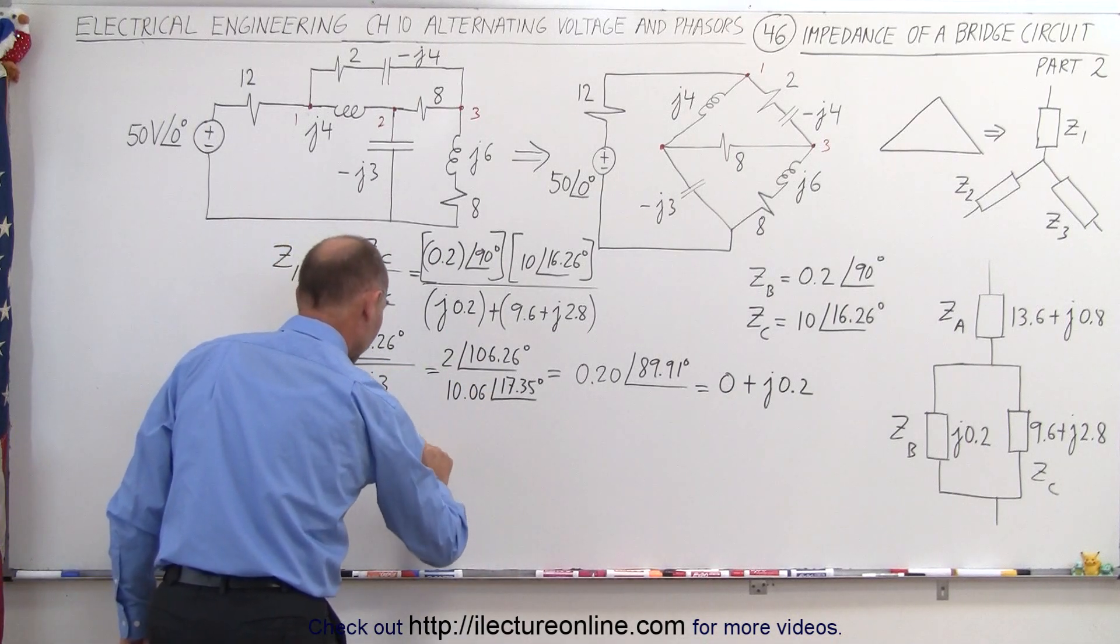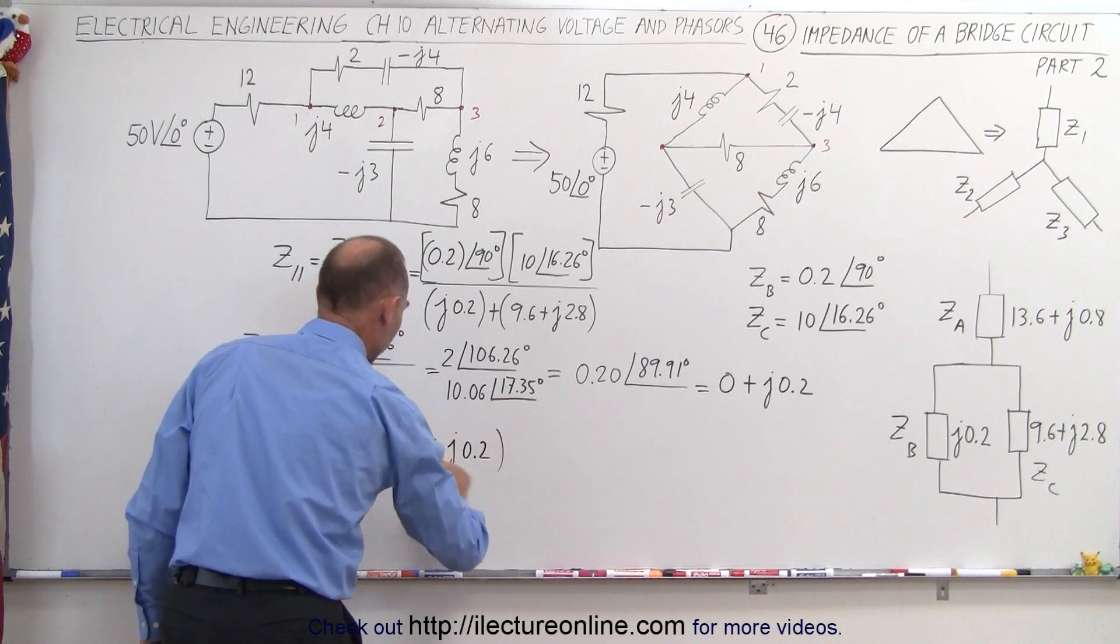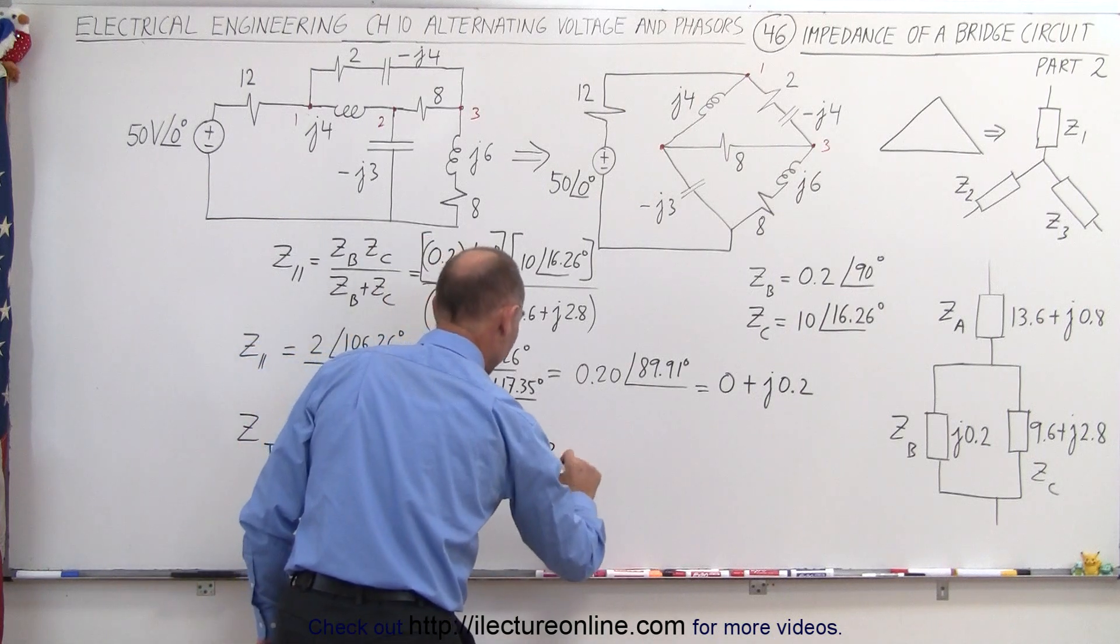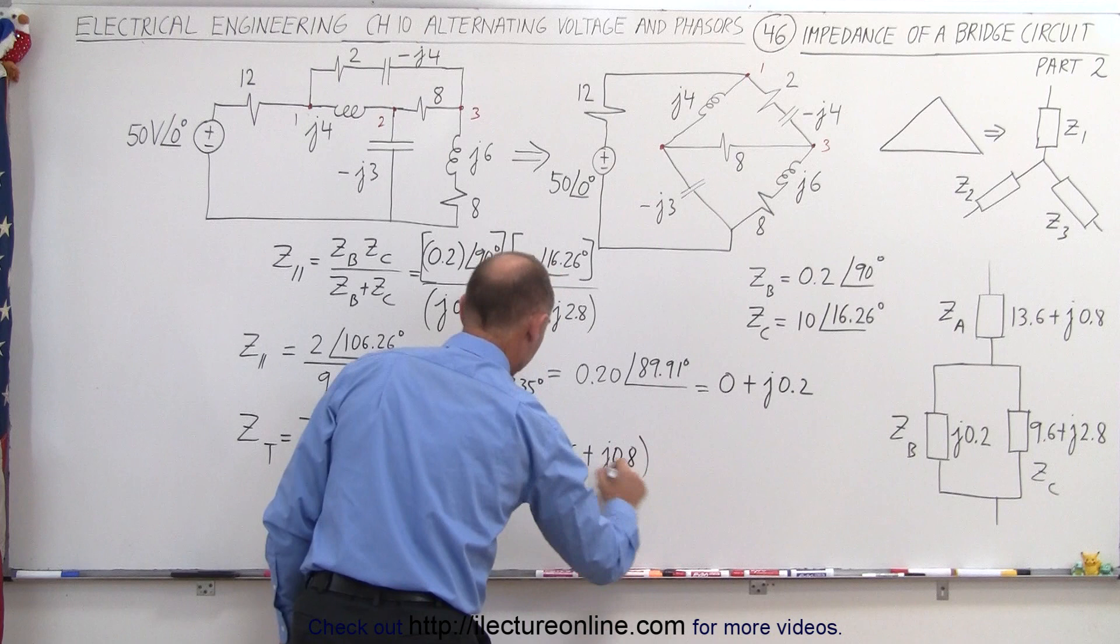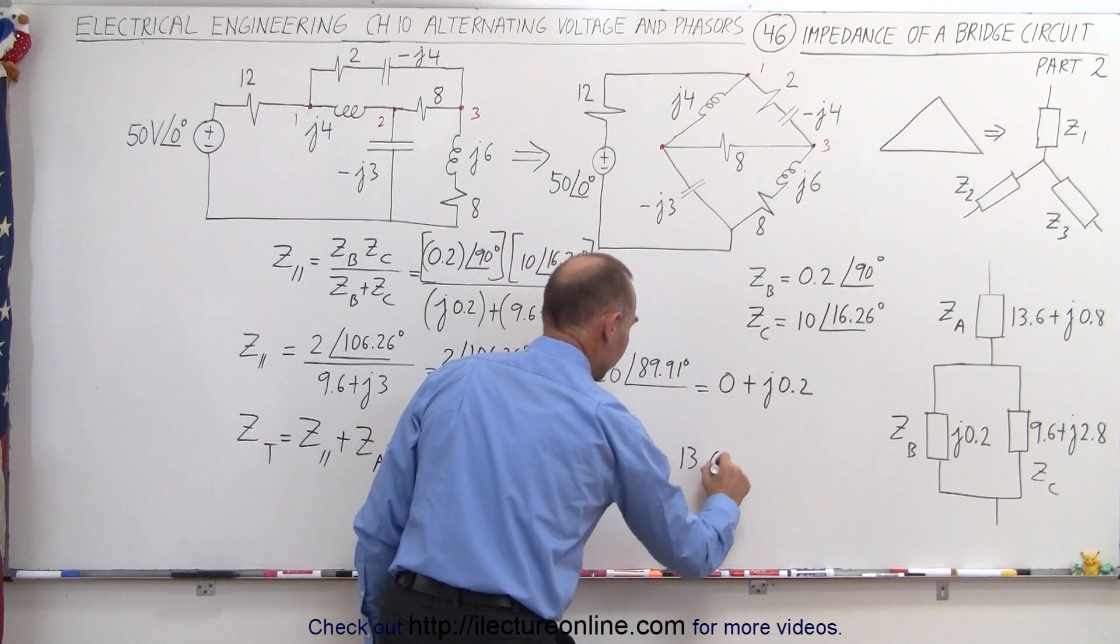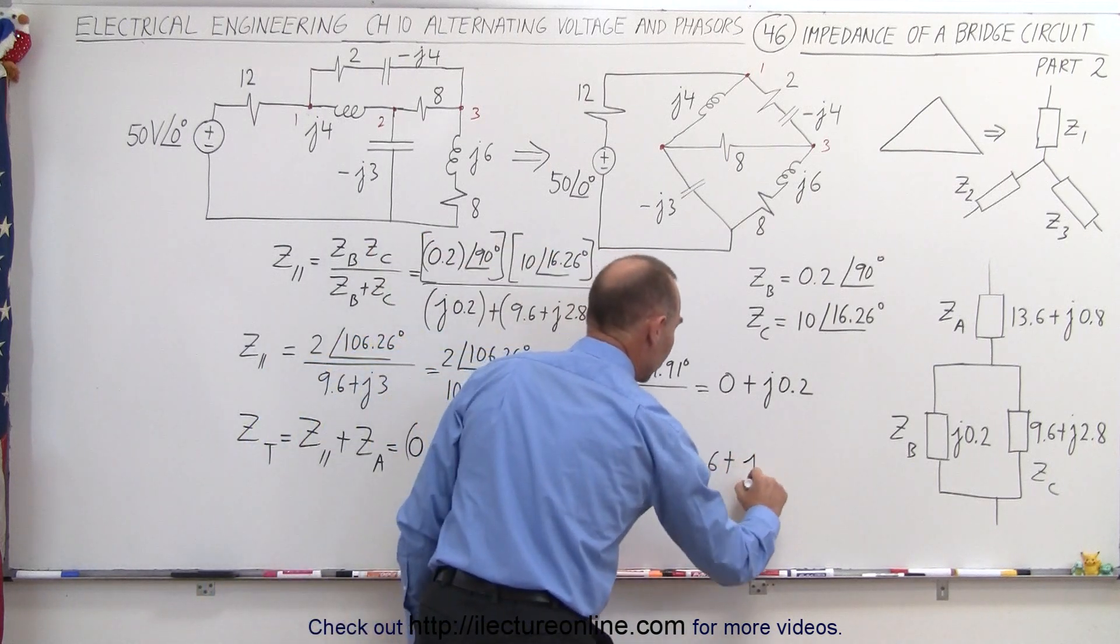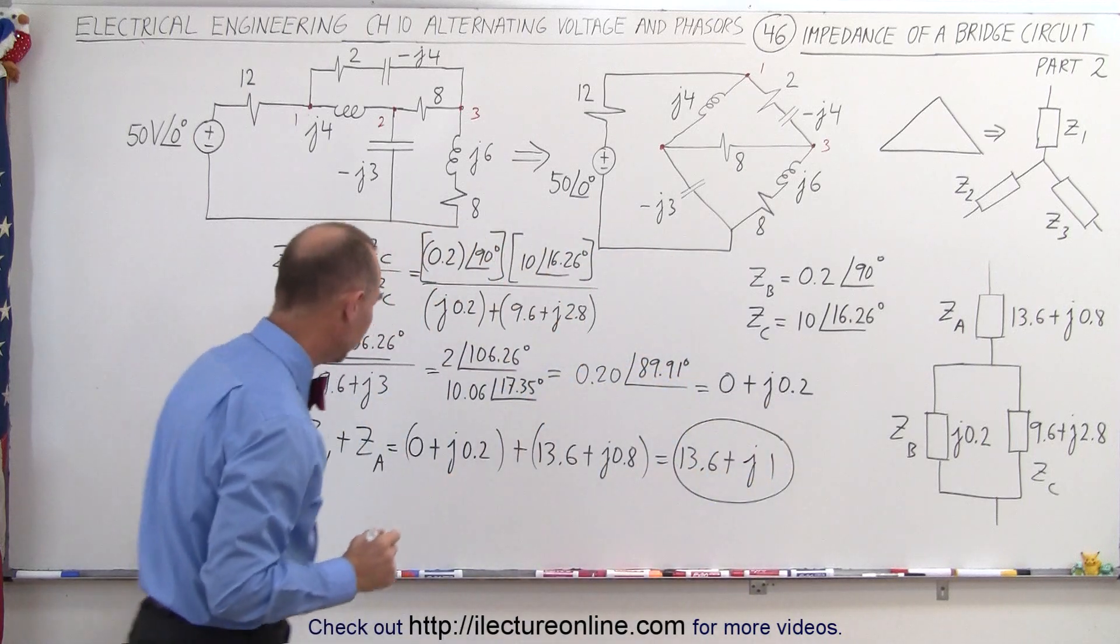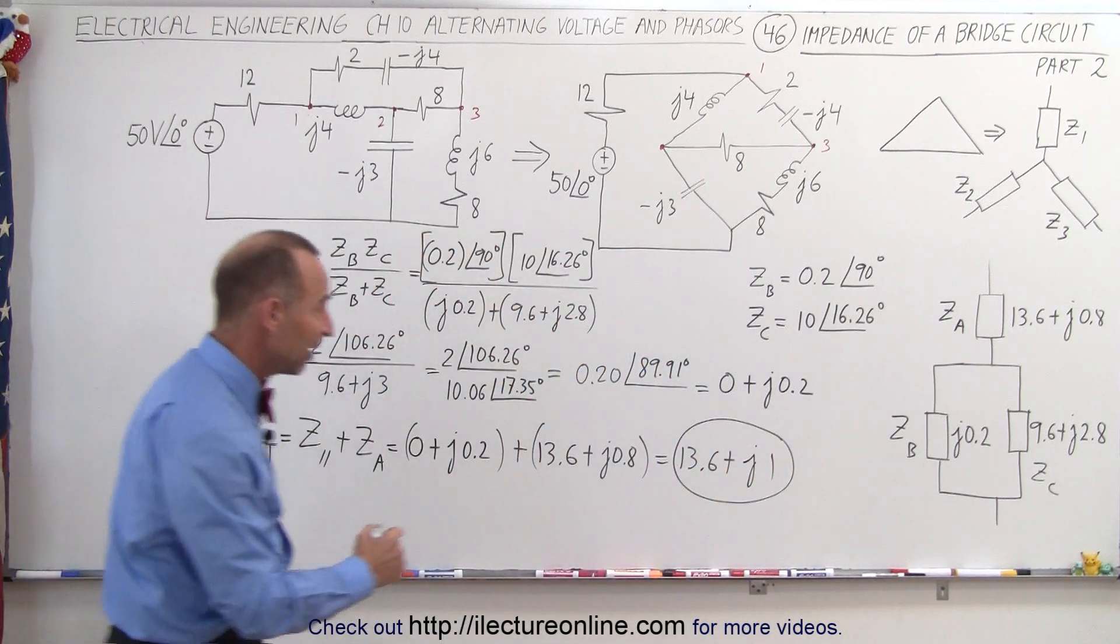Now, we're going to add that to our ZA, so we get the parallel branch, that's 0 plus j0.2. We're going to add that to our impedance A, which is 13.6 plus j0.8, which is equal to 13.6 plus j1. So, this is our total impedance on the circuit, and then if we convert that back into magnitude and phase angle format.